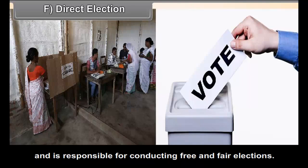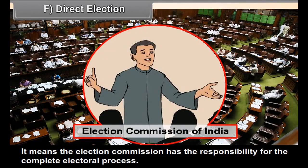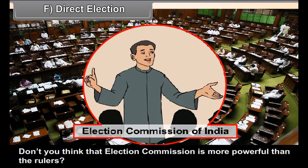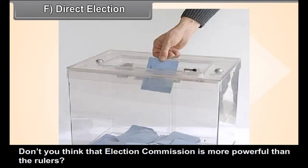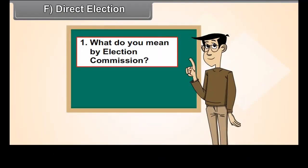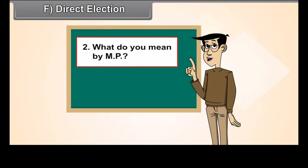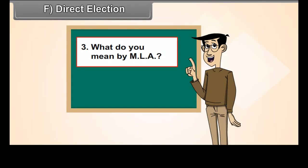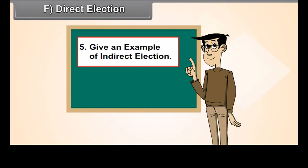The Election Commission of India is formed through the provisions of the Indian Constitution. It consists of the Chief Election Commissioner and two other Election Commissioners. It performs the functions of preparing the voters list, announcing the schedule of elections, and is responsible for conducting free and fair elections. The Election Commission has responsibility for the complete electoral process.